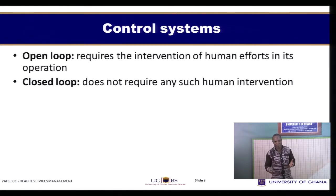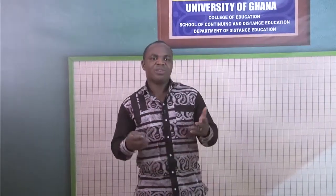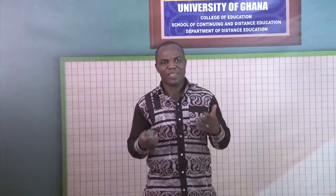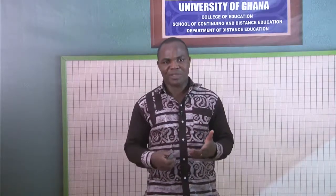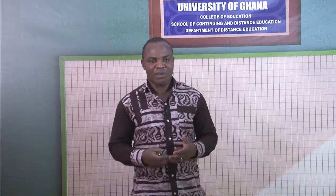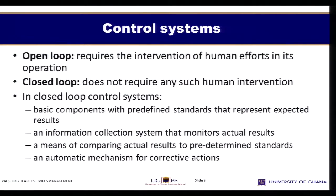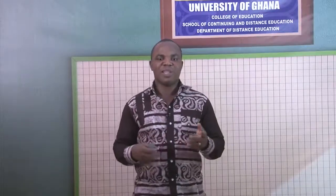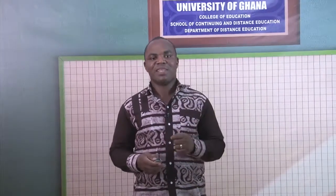Open loop control systems require the intervention of human efforts for them to exist, unlike the closed loop control systems, which don't require human efforts once they have been implemented. Closed loops apply to closed systems whereby the system automatically regulates itself, while open loops apply to open systems where human intervention is needed. In closed loop control, basic components with predefined standards represent expected results, an information collection system monitors results, there is a means of comparing actual results to predetermined standards, and there is an automatic mechanism for corrective actions where differences exist.